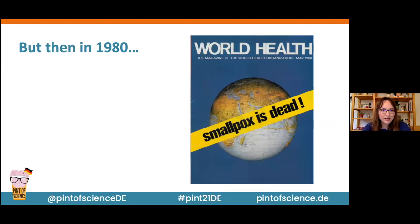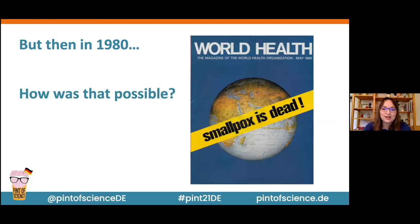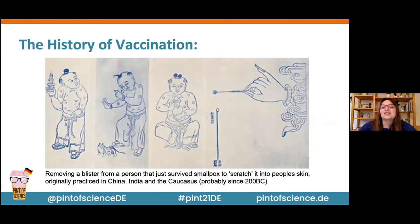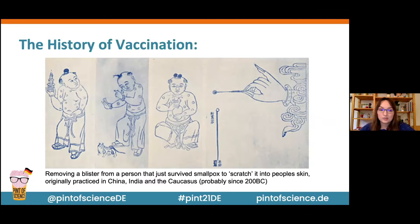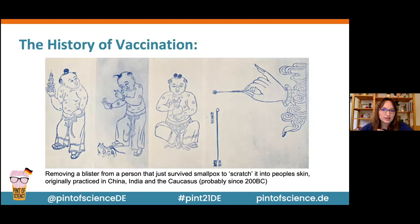That is of course very surprising given how big an impact the virus had, and you may wonder how that was possible. This gets us into the history of vaccination. Because smallpox was such a dangerous and severe disease, people have been experimenting with vaccination for a long time. In India, China, and other parts of Asia, there was actually a practice where people who had blisters and lesions would be sought out, the lesions scraped off, and people would either try to inhale them, swallow them, or have them scratched into the skin — in the hopes that this could protect against a much more severe pox infection. This was already happening around 200 BC.